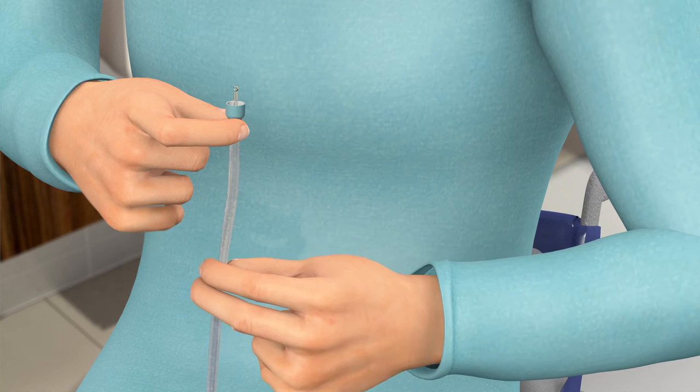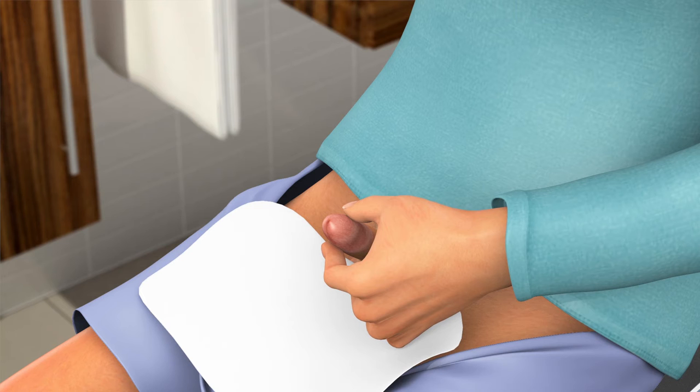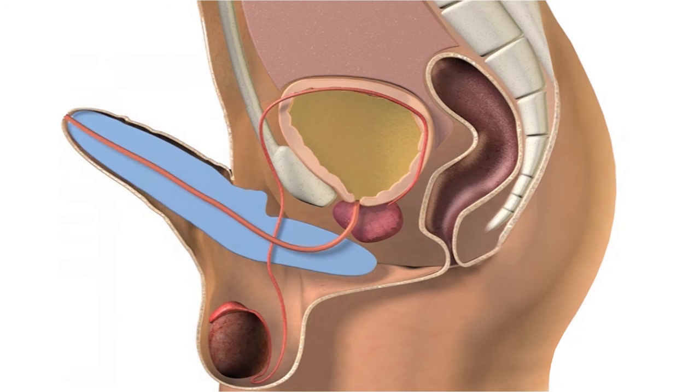Hold your penis pointing upwards and close to your stomach. This will ease the insertion of the catheter as the natural S-shape of the urethra will then change into a U-shape.